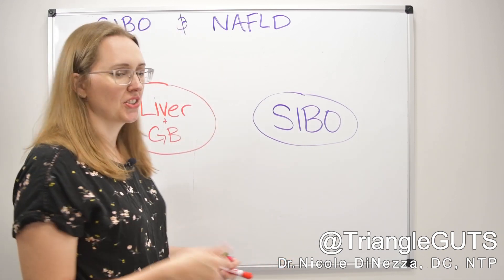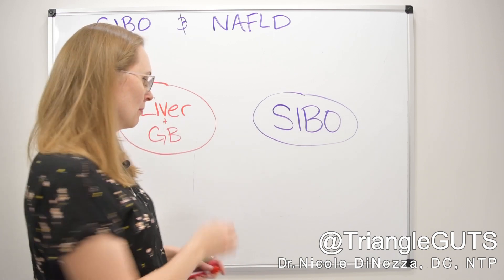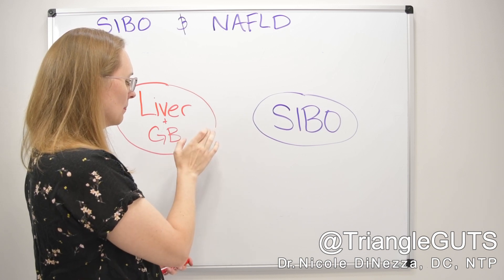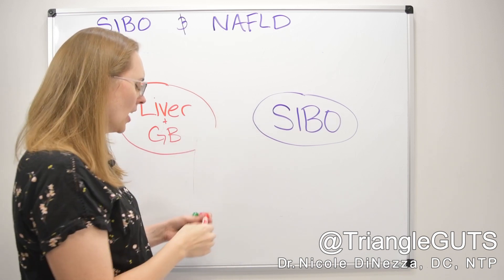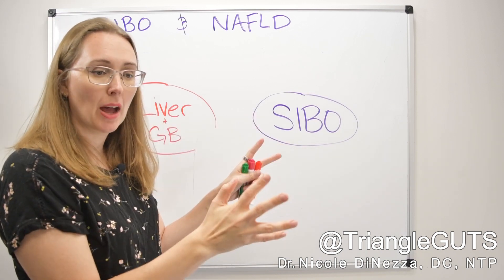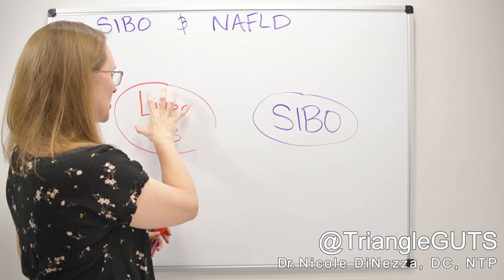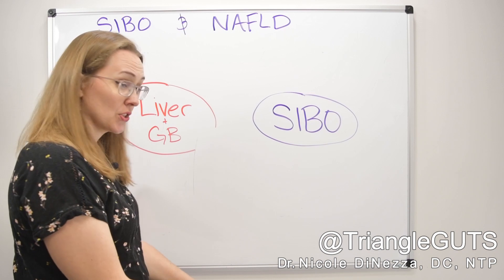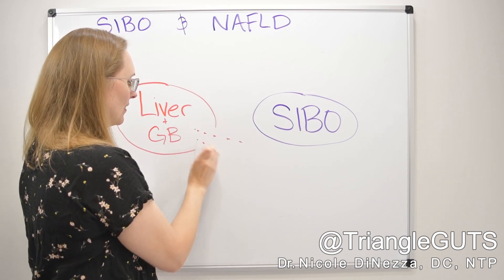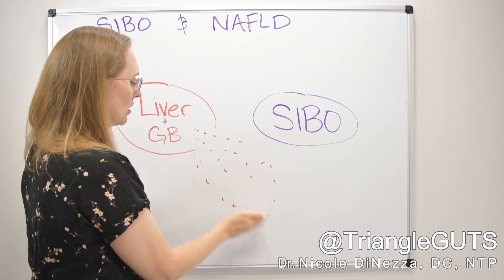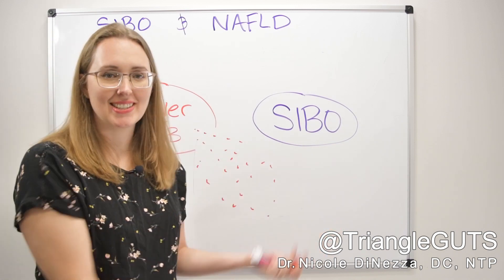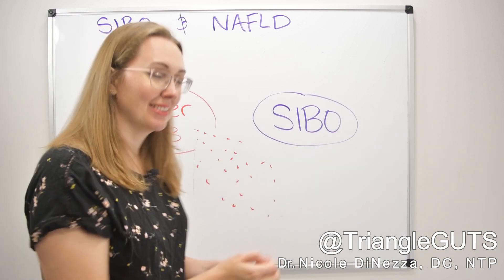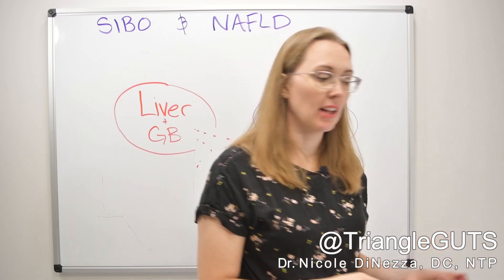When you see elevated ALT, AST — and I believe this is true of GGT as well — what that is signifying is that the liver cell itself has lysed open. It's opened up because there's damage and inflammation. Some of the liver cells have died and burst open, and then all of those enzymes get spewed out of the cell as it's dying, spilling over into the bloodstream. That is what we are picking up in blood work when we see elevated liver enzymes.